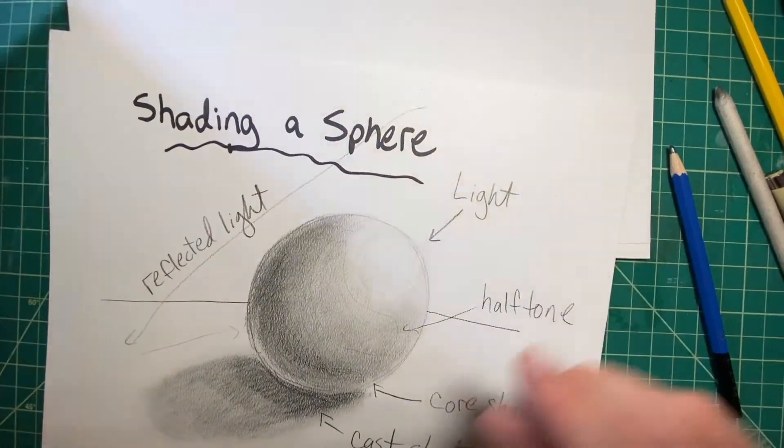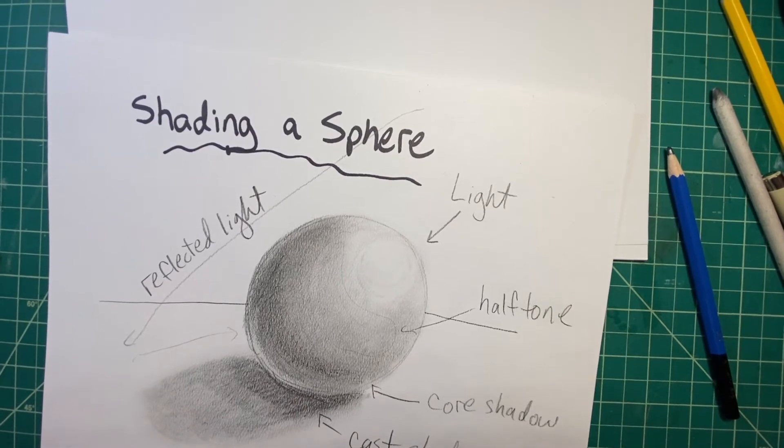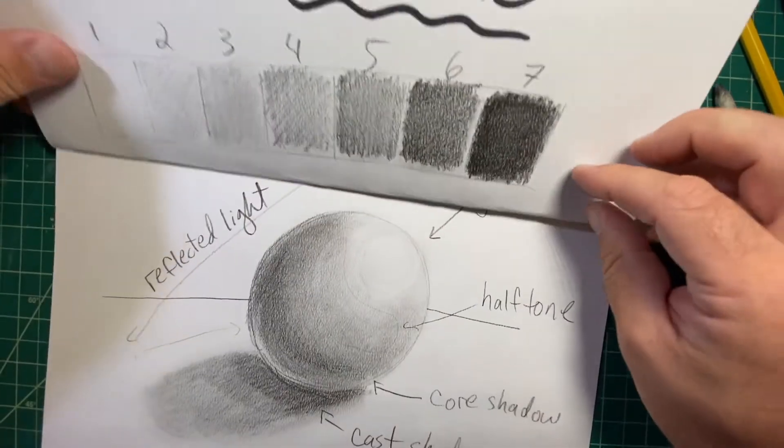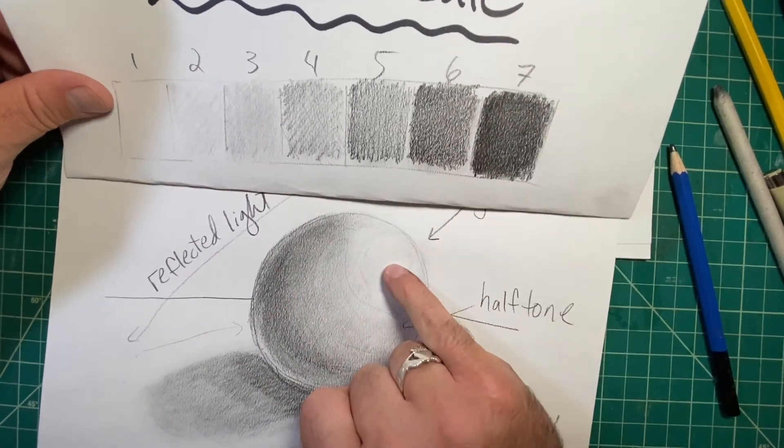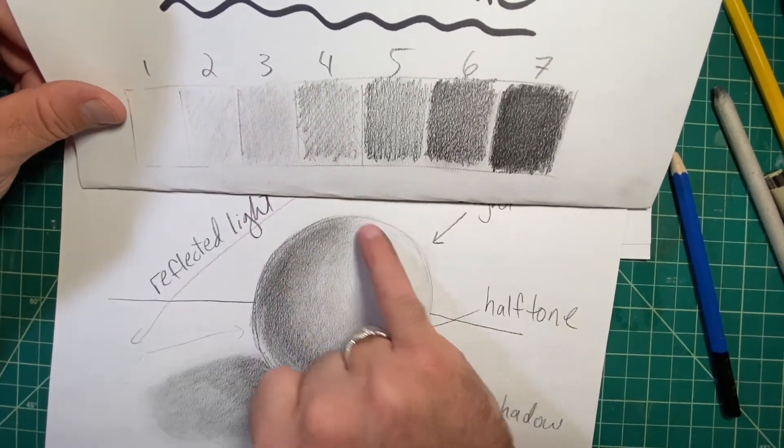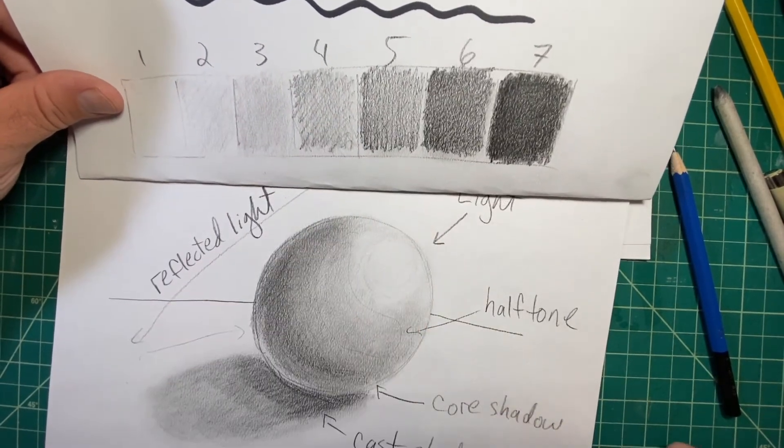In this drawing of a sphere, I can see that my core shadow is in between a six and a seven. My highlight is about a one. This half tone here is very similar to the number four here.